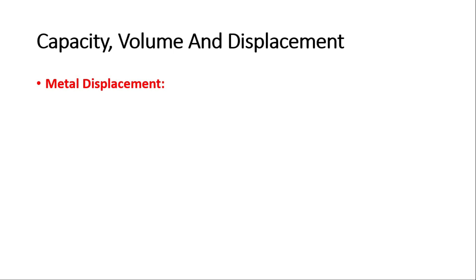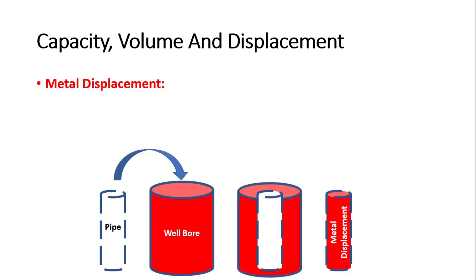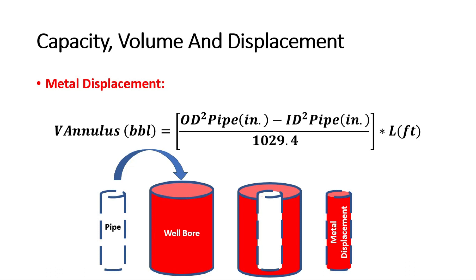An important parameter to calculate is metal displacement. Metal displacement is the volume of mud expelled from the well when the drill string or casing is run into the hole, and likewise the volume of mud required to fill the well when pipe is pulled from the hole. Displacement normally represents only the volume of the pipe itself. For special situations such as when the pipe is plugged or floating casing, the pipe capacity must be added to the displacement. Drill string displacement: (OD_pipe² − ID_pipe²) / 1029.4 × length of pipe.